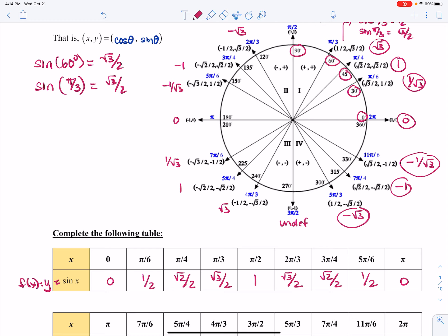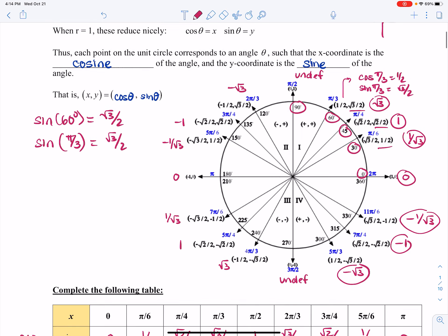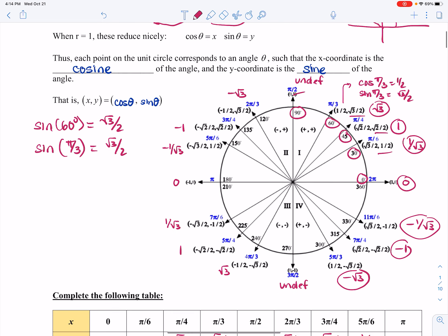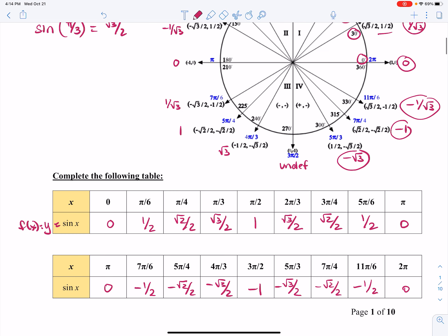As we go around the ring here, y-coordinate is 0, 1 half, root 2 over 2, root 3 over 2, 1, and so on. So there are the points.